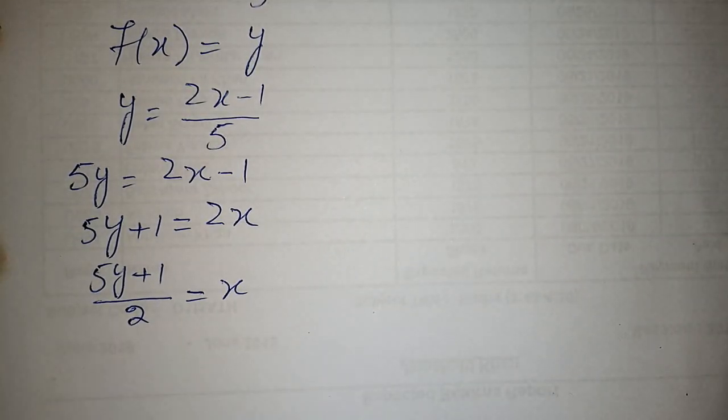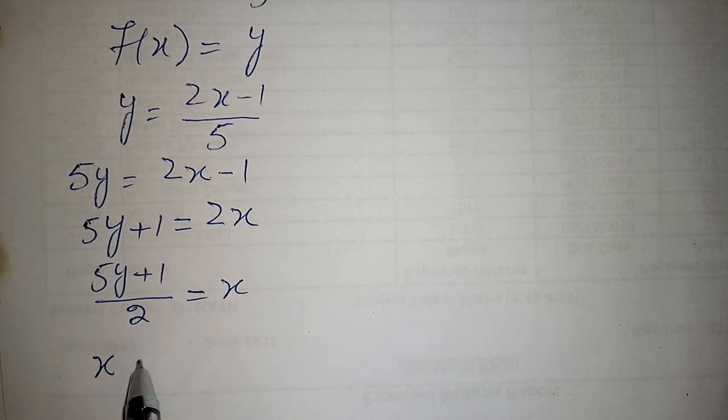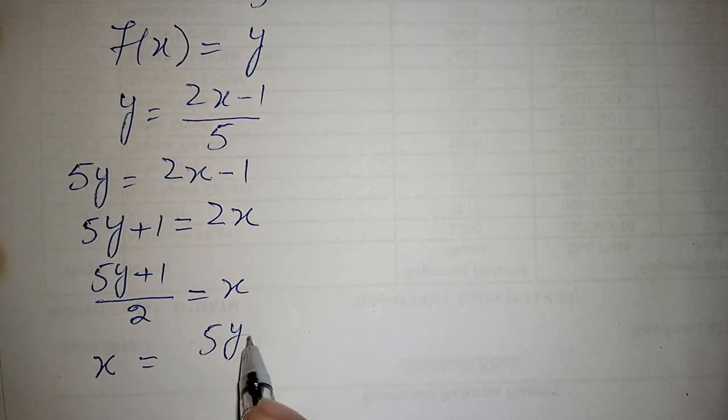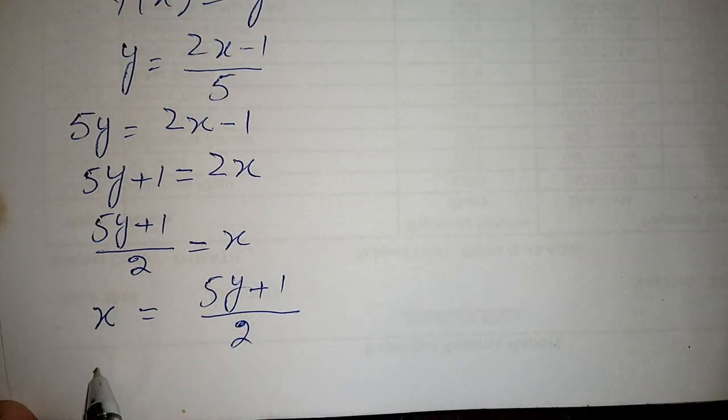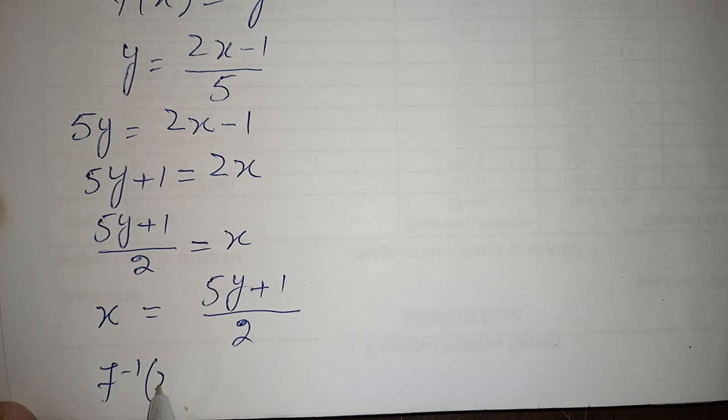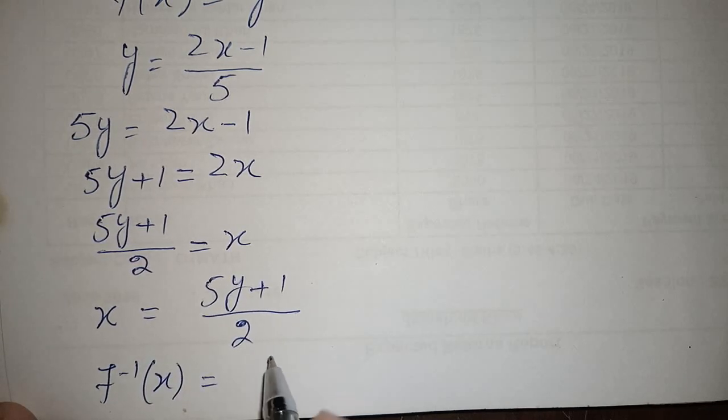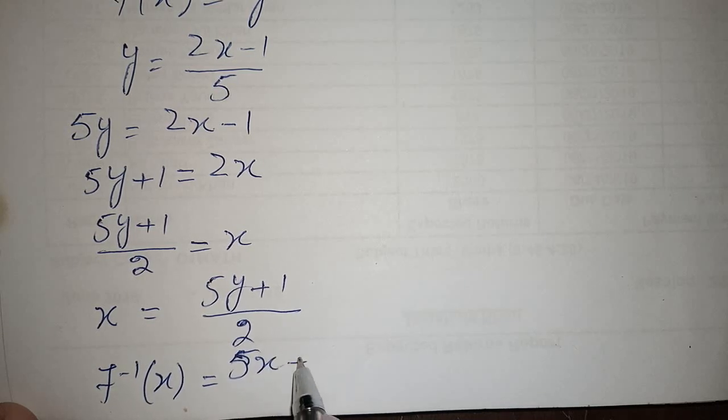The value of x has been found. Now for x to be the subject, it is necessary that your subject alphabet be on the left hand side. Write it on the left hand. x is equal to 5y plus 1 upon 2. This is your inverse function. Rewrite it as f inverse of x is equal to, replace y with x, 5x plus 1 upon 2.